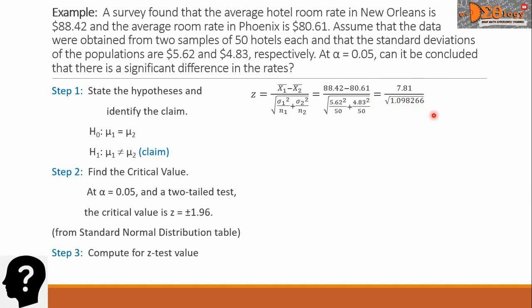Getting the quotient, the value is 7.45. Step 4 is, we make the decision.